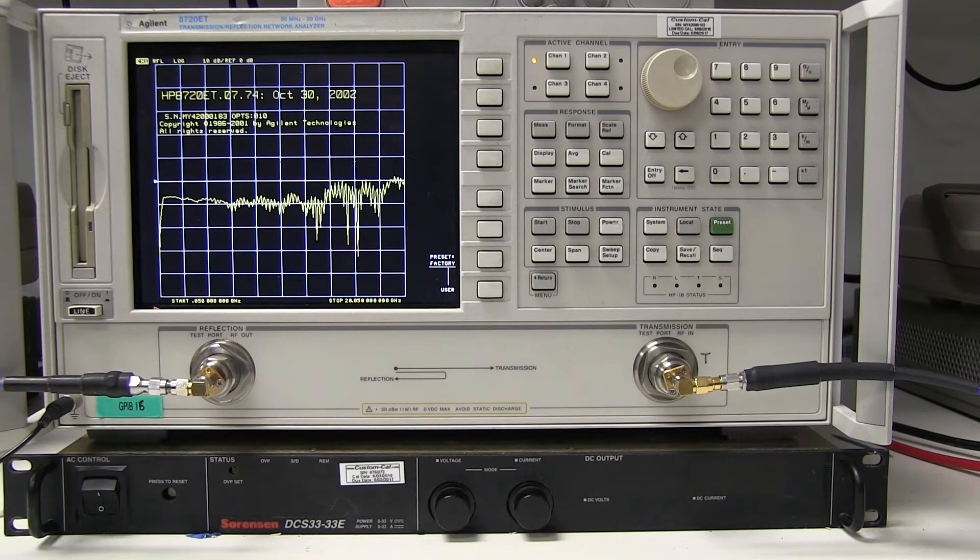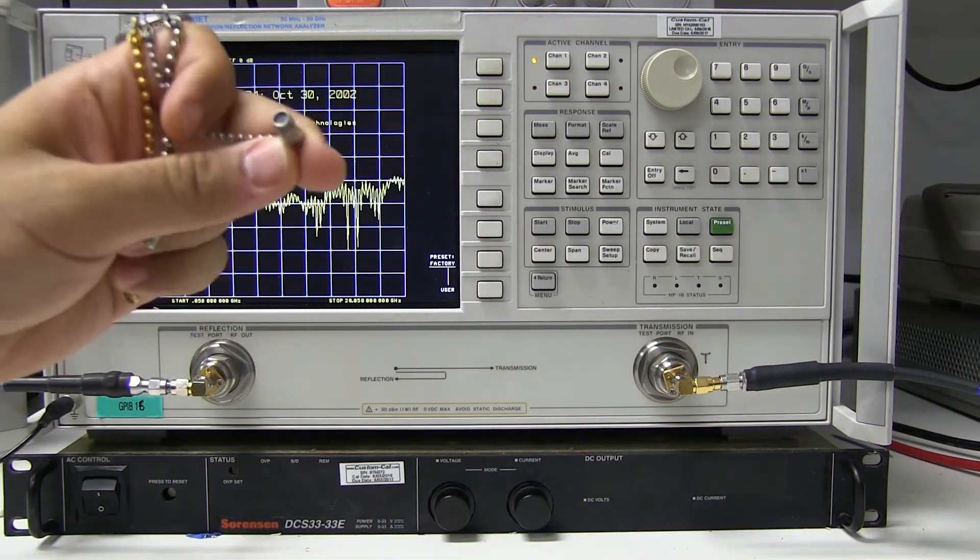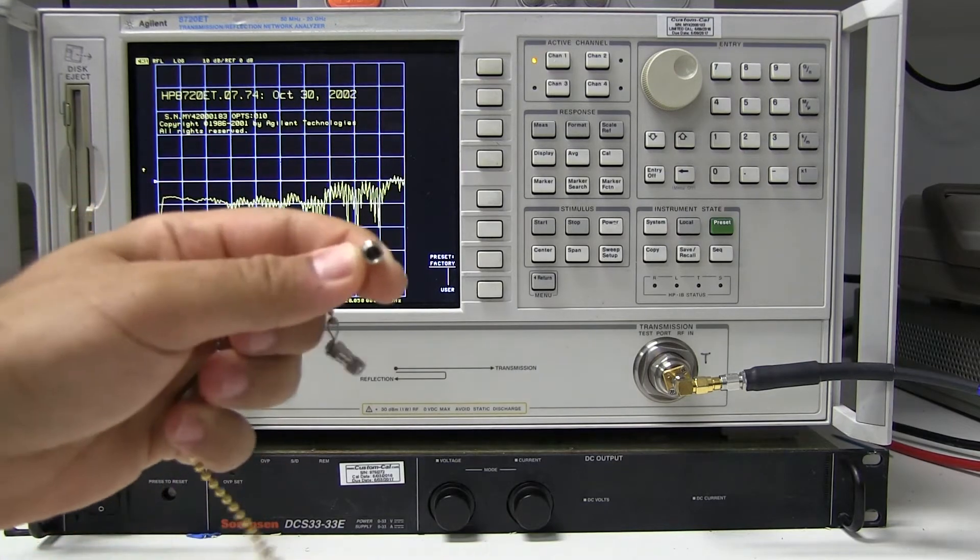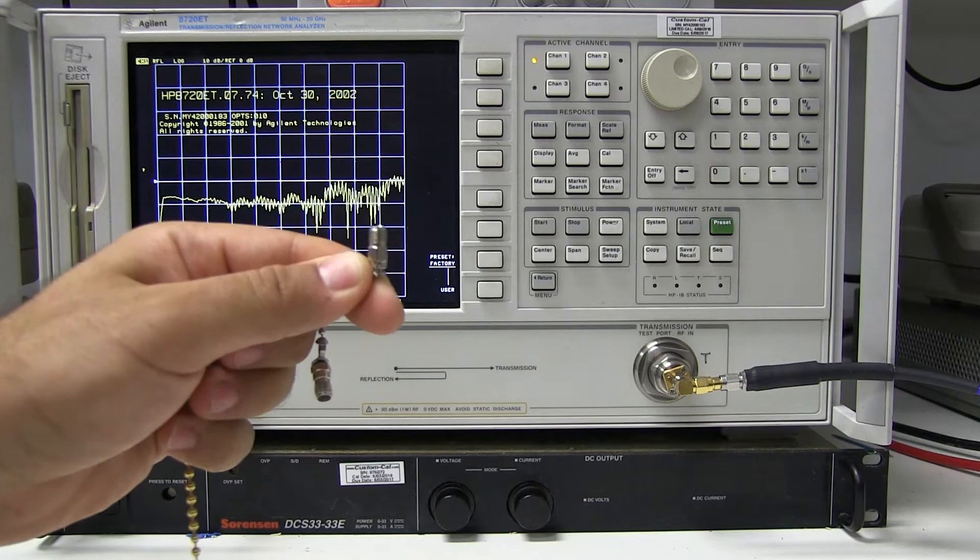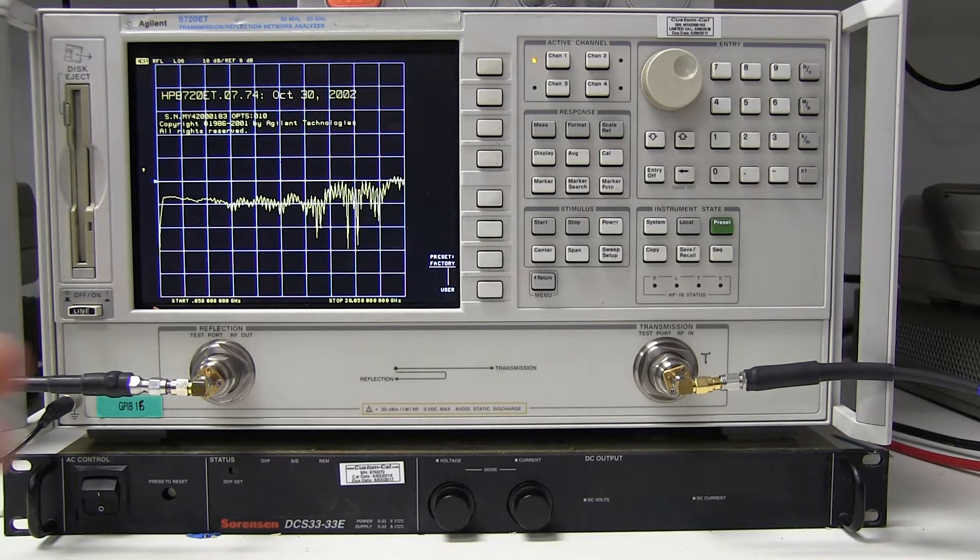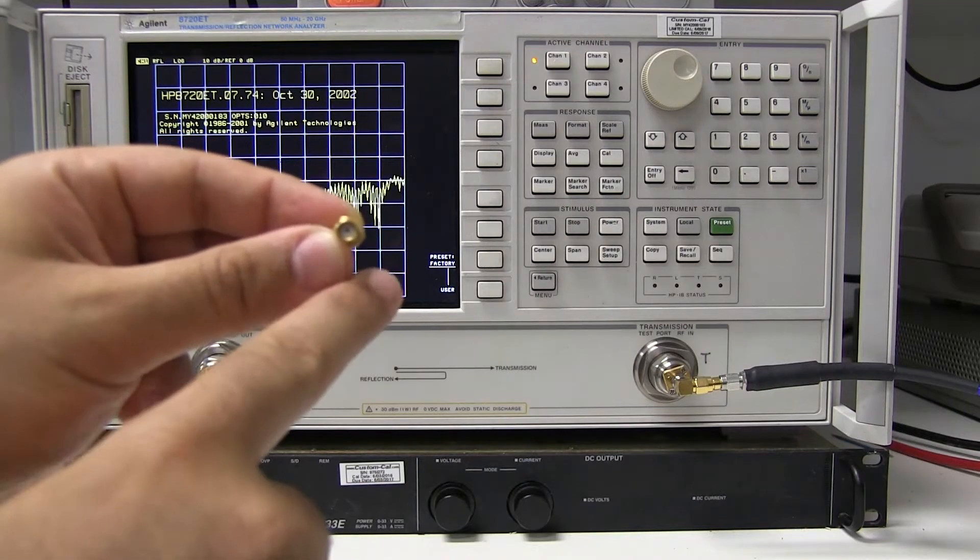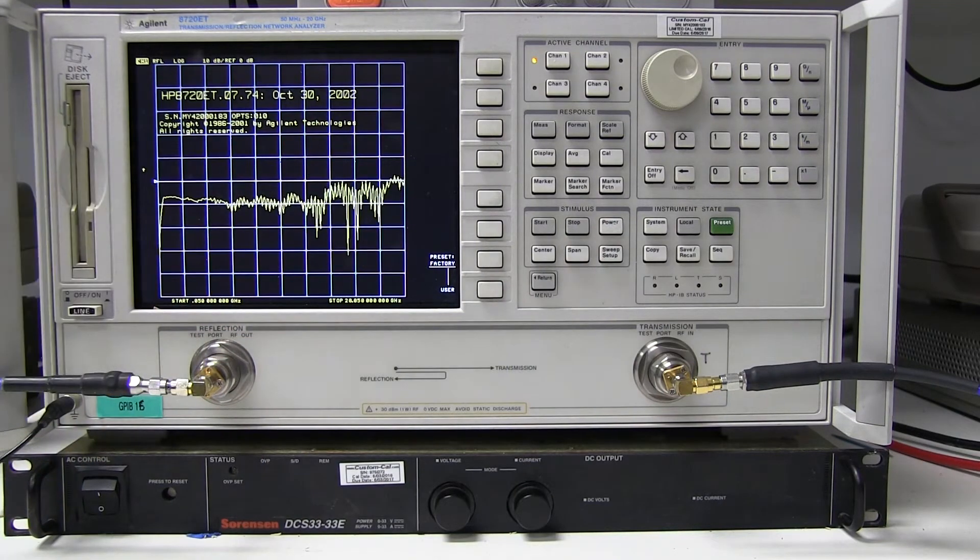is an Open Short Load Calibration Kit. I have one right here, and it consists of an RF open. When screwed to the SMA male connector, this SMA female adapter simulates an open circuit on the RF. A short, which when connected to the SMA male connector, the center conductor is grounded to the outer casing, so it simulates a short circuit.